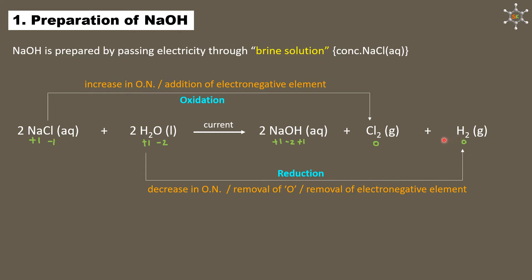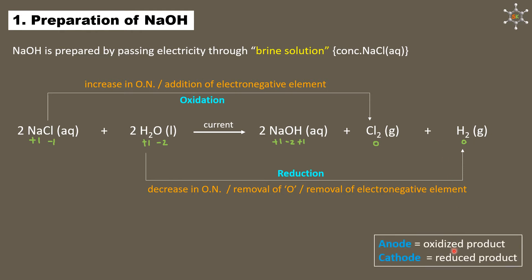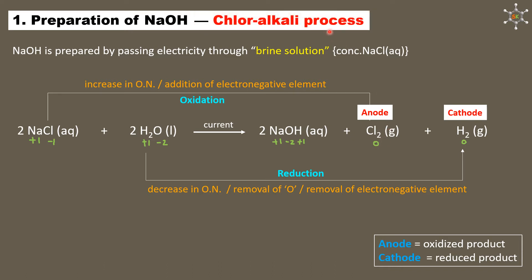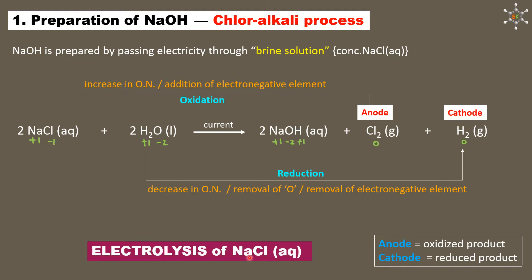Since both oxidation and reduction occur in this reaction, it is a redox reaction. The oxidized product (chlorine) is collected near the anode, and the reduced product (hydrogen) is collected near the cathode. Because we obtain alkali (sodium hydroxide) and chlorine gas as products, this is called the chloralkali process. Since sodium chloride is split using electric current, it is also called the electrolysis of aqueous sodium chloride.